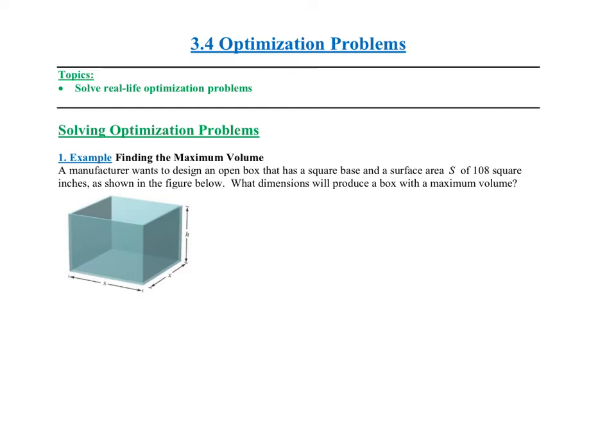Now that we know how to find maximums and minimums using calculus — we can use the first derivative test or the second derivative test — we can go to some real-world optimization problems. Maximizing and minimizing is one of the biggest things that we do in the business industry. It's a very important concept, so let's look at some of the applications to see how it works.